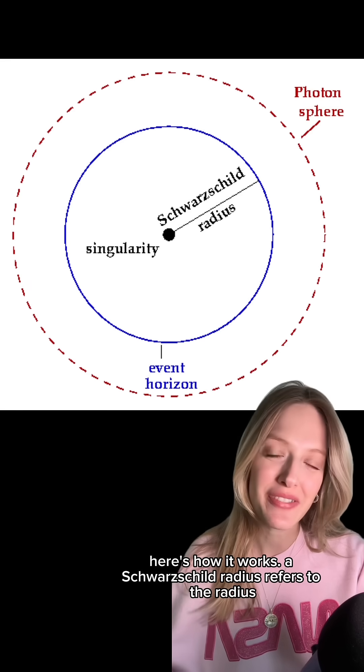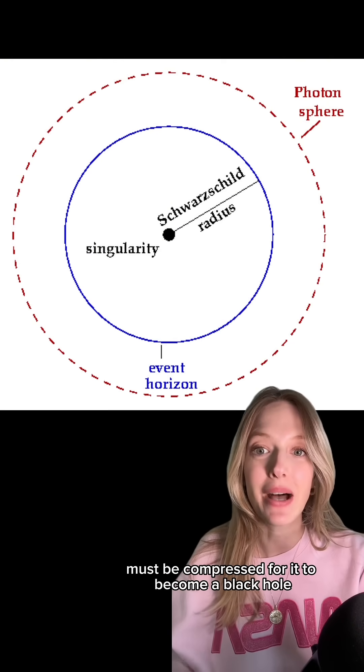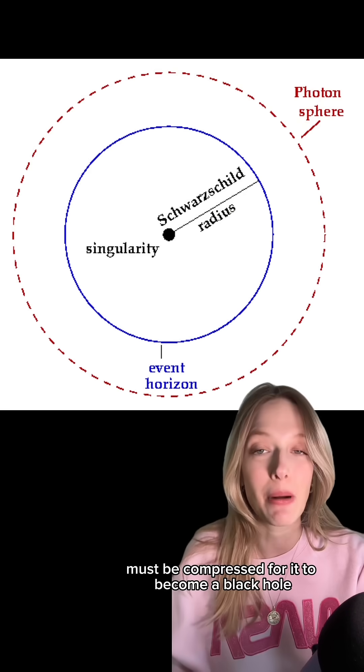Now here's how it works. Our Schwarzschild radius refers to the radius within which all the mass of an object must be compressed for it to become a black hole.